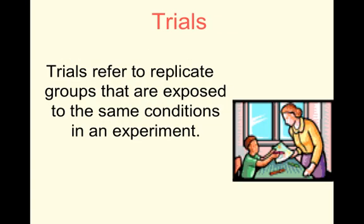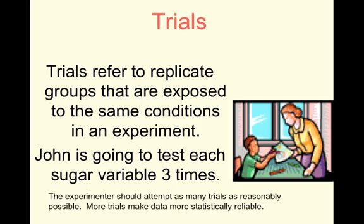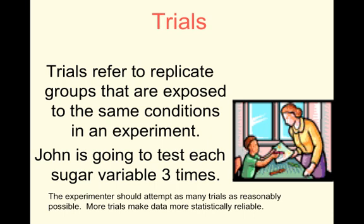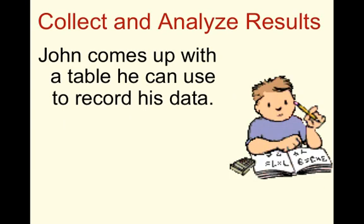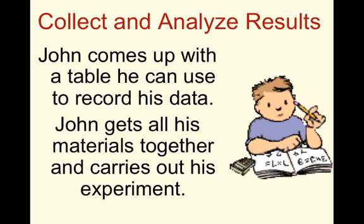Let's talk about trials. Trials refer to replicate groups that are exposed to the same conditions in an experiment — how many times you're going to do this experiment. John is going to test each sugar variable three times. The experimenter should attempt as many trials as reasonably possible because more trials make the data you collect more statistically reliable. So John comes up with a data table to record his data. It's very important to decide before you start the experiment how you're going to organize the data so that you can make sense of it later.